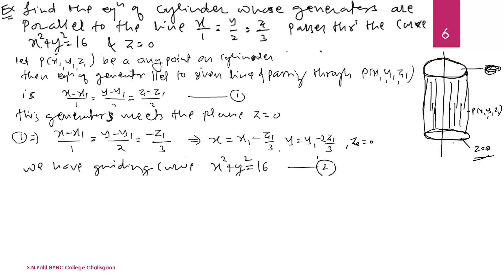Substituting into the guiding curve, equation 2 becomes: (X1 − Z1/3)² + (Y1 − 2Z1/3)² = 16. Simplifying the brackets, the denominator throughout is 3² = 9. Multiplying both sides by 9 gives: (3X1 − Z1)² + (3Y1 − 2Z1)² = 9 × 16 = 144.